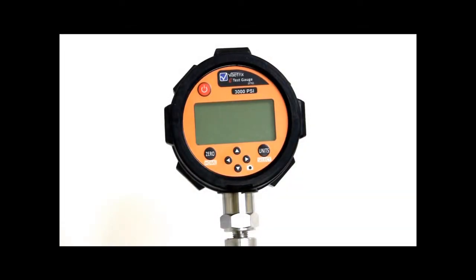Hi, this is Jason Noir with VATRIX and today we're going to cover the basic features and operations on this VATRIX ETG gauge. So the VATRIX ETG is available in two accuracies, .05 and .1%. So let's get started.